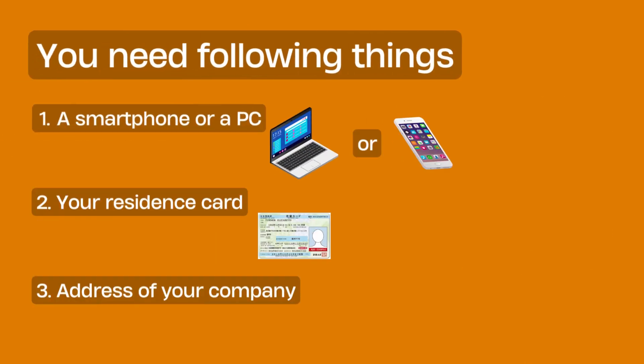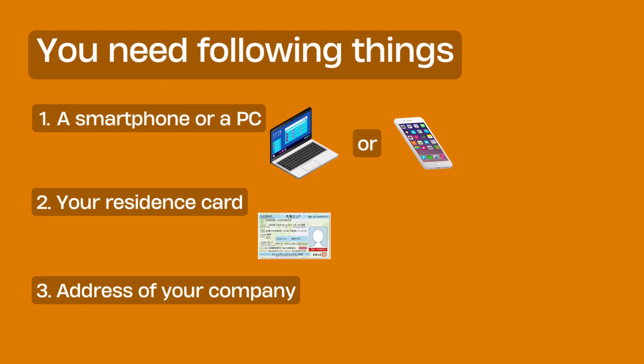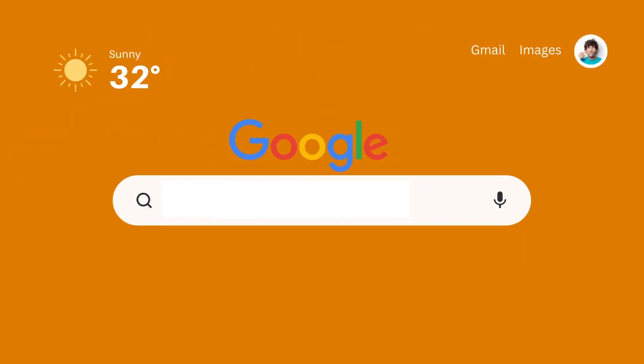You will need a smartphone or a PC, your residence card, and the address of your company. Then go to Google and search for the electronic notification system.